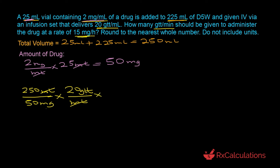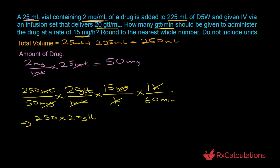Since we need drops per minute, we convert using the factor that one hour equals 60 minutes — hours cancel — leaving drops per minute. Multiplying all numerator terms and dividing by denominator terms: 250 × 20 × 15 × 1 ÷ (50 × 60) = 25 drops per minute. Rounded to the nearest whole number, the answer is 25.